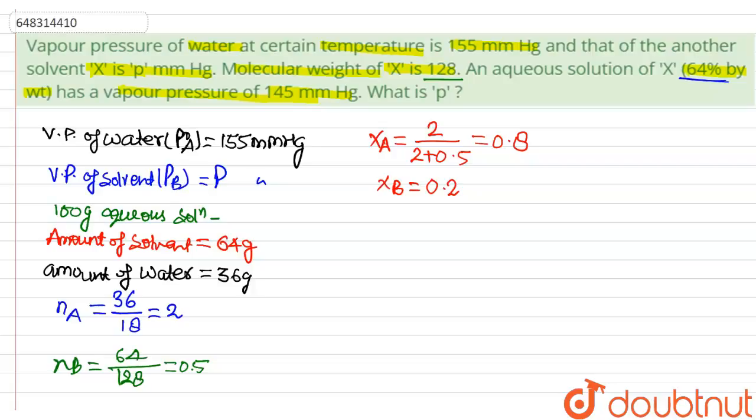By this data, we can solve this question using Raoult's law. Raoult's law is: P°A times XA plus P°B times XB equals 145 mmHg.